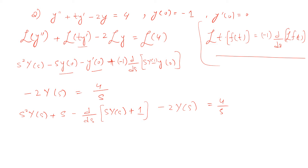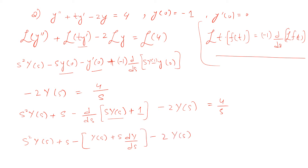Using Laplace transform properties, we find the transform of derivatives and of functions multiplied by t. Simplifying further, the derivative of s·Y(s) is Y(s) + s·dY/ds. So the equation becomes: s²Y(s) + s − Y(s) − s·dY/ds − 2Y(s) = 4/s.